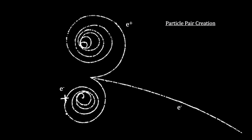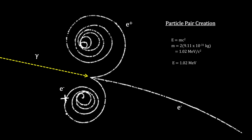Here's an event in a cloud chamber that shows the creation of a pair of particles: one electron and one positron. This event was the conversion of a high-energy gamma ray that kicked an electron out of an atom and was itself converted into two particles. The gamma ray photon does not show up in the cloud chamber because it has no charge. This is an example of converting energy to matter.